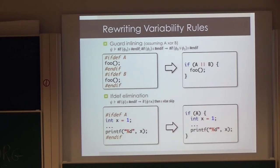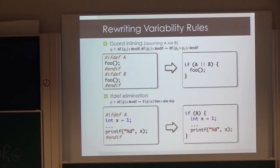We have many other transformations — for example, a merging rule assuming A and B are mutually exclusive features, allowing a disjunction of features. We also deal with variables, typedefs, structures, and functions. Finally, we have if-def elimination: if everything else didn't match, we just turn the #ifdef into a normal if. This is the last rule, which means the order matters.